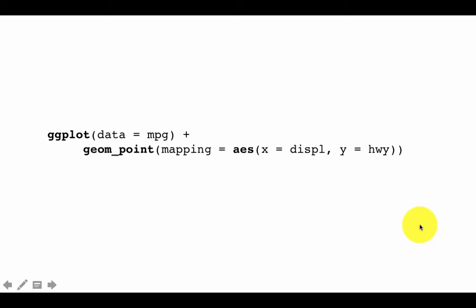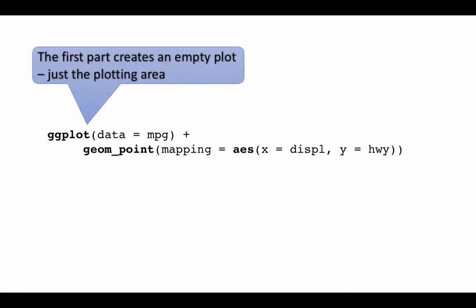Okay, now some important points here. The first part creates an empty plot. It's just the plotting area. So in fact, if you execute just ggplot data equals MPG, you'll see nothing. Right, because we have not indicated what to plot, how to plot it, nothing. And then we say plus. And here we are adding a layer of points, as we already discussed.